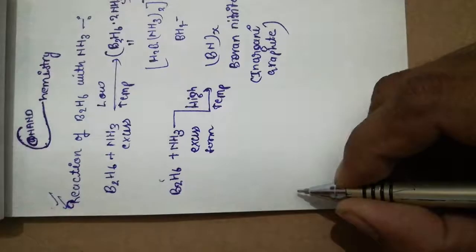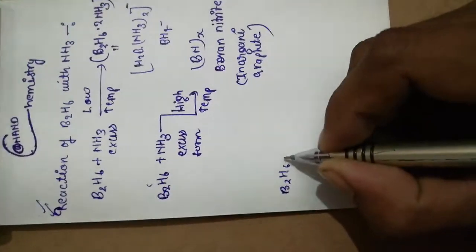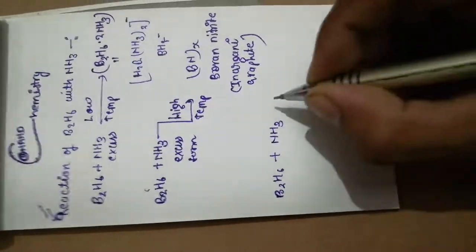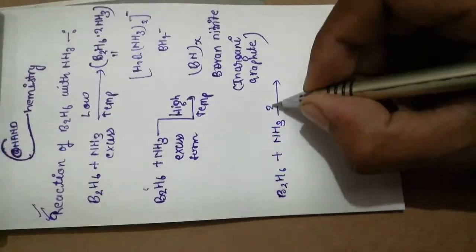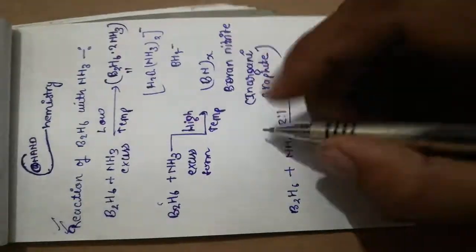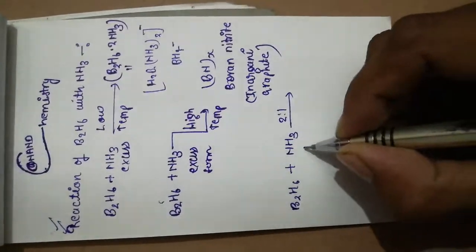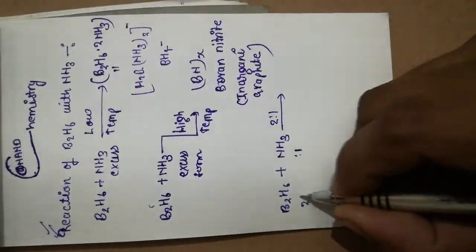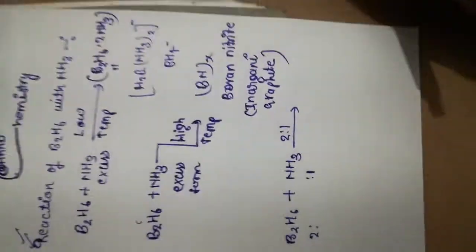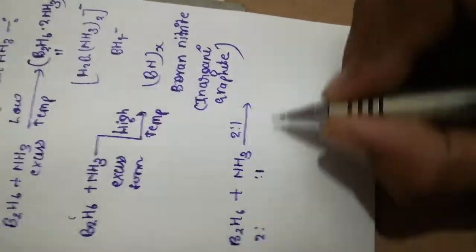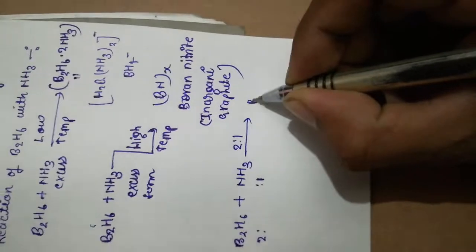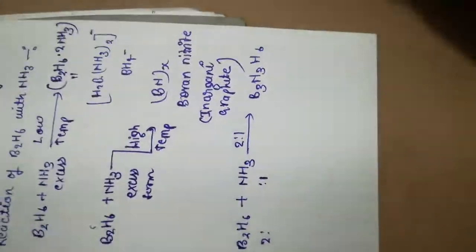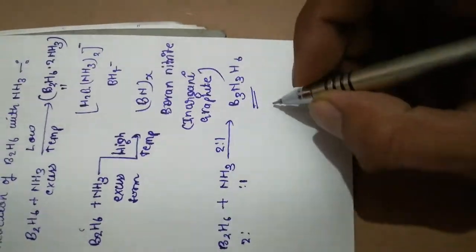When the B2H6 Borane molecule reacts with Ammonia molecule in 1:2 ratio, meaning one ratio of Ammonia molecule and two ratio of Borane molecule, then the product is B3N3H6.